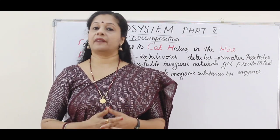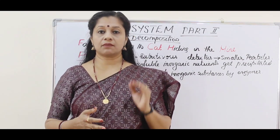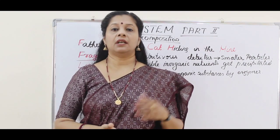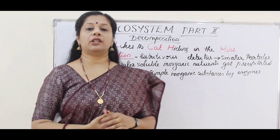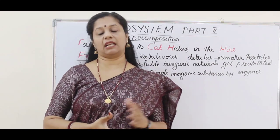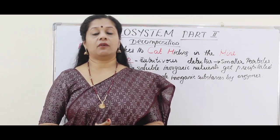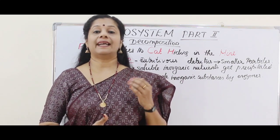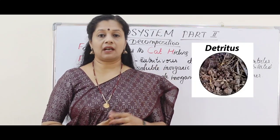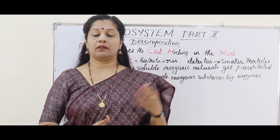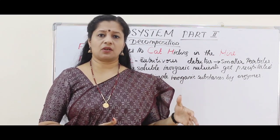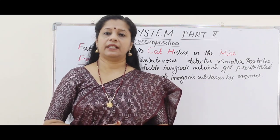Decomposition is a function of an ecosystem, done by smaller organisms and microbes. During decomposition, the organic substances are broken down into simple inorganic substances like carbon dioxide, water, and nutrients with the help of microorganisms. What is the raw material for this decomposition? It is called detritus. Detritus means fallen leaves, twigs, flowers, dead animal bodies, dead plants, and the excreta of animals — everything biodegradable falling on the soil.